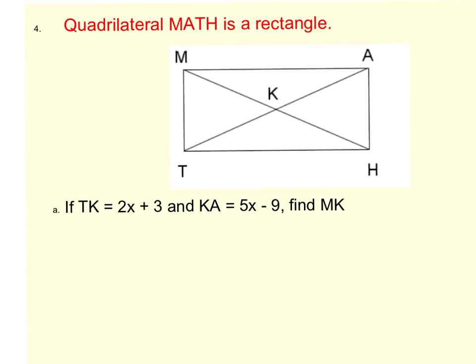Because this is a rectangle, we know that the diagonals bisect each other. Therefore, TK and KA have to be congruent. To do this problem, we're going to set 2x plus 3 equal to 5x minus 9 and solve for x.